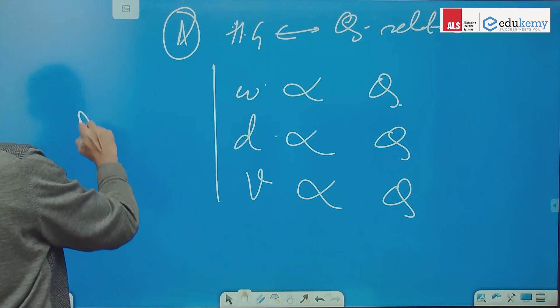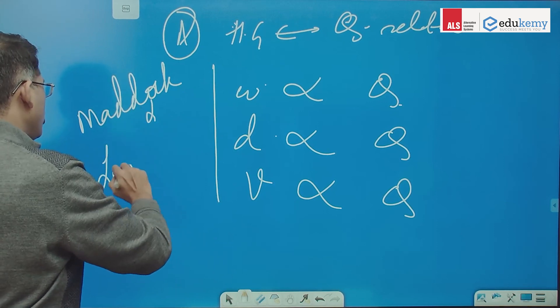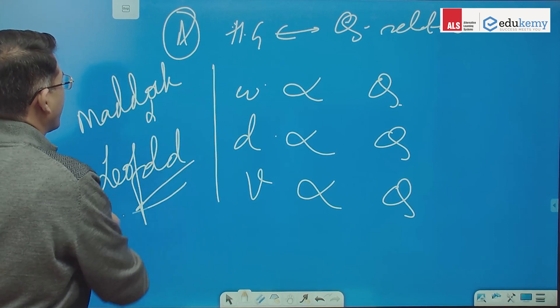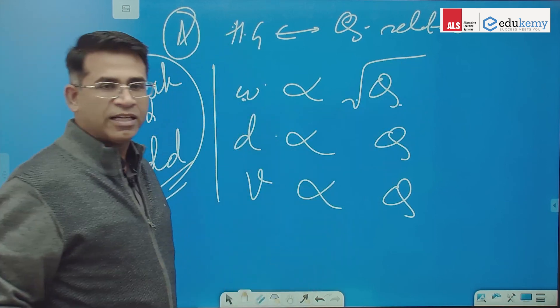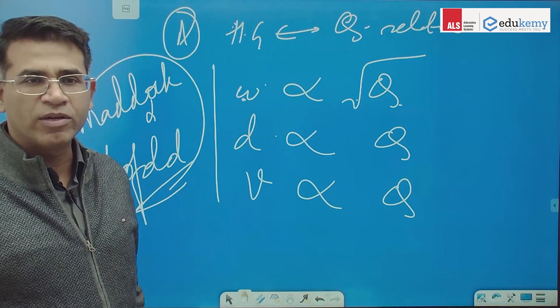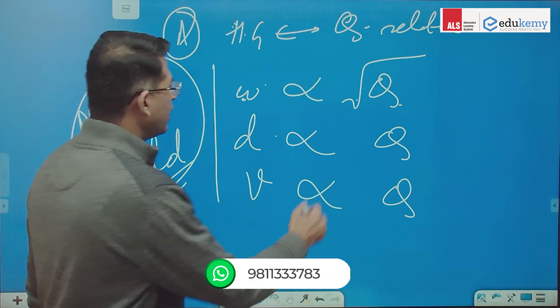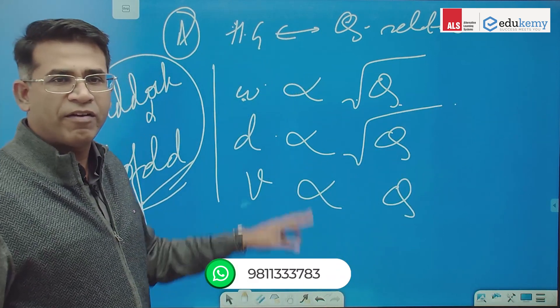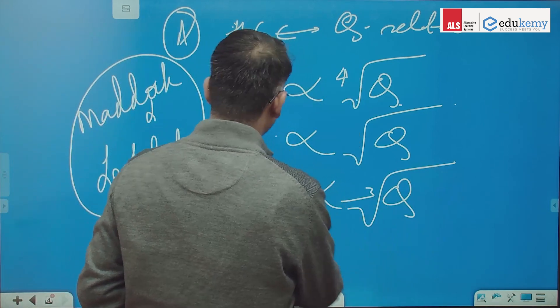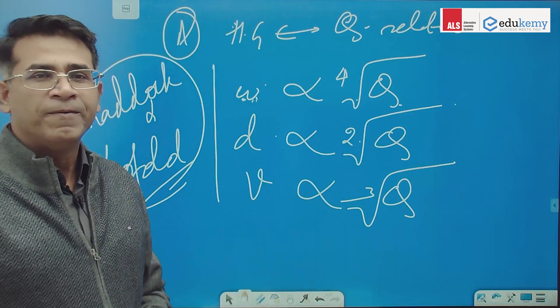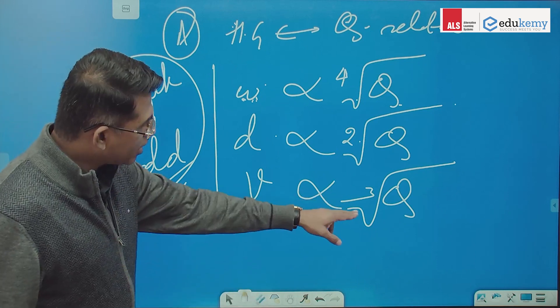The person who has studied this is Maddock and Leopold. Maddock and Leopold are the ones who have studied it. What is the relationship of width and discharge? What is the relationship of depth and discharge? Width is fourth root. Velocity is cube root. Depth is square root.